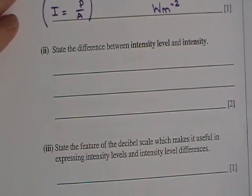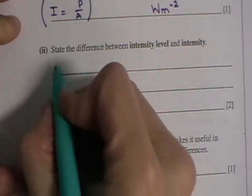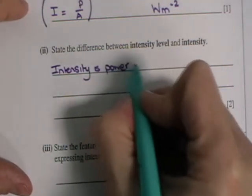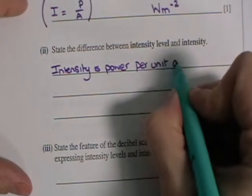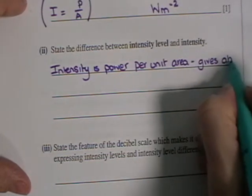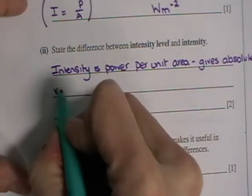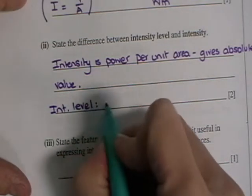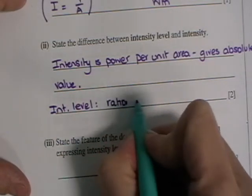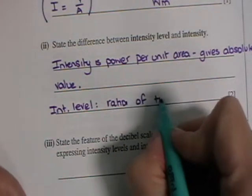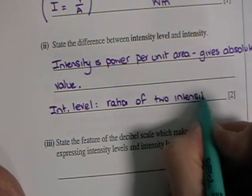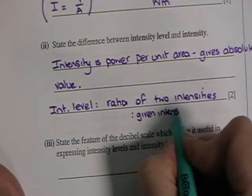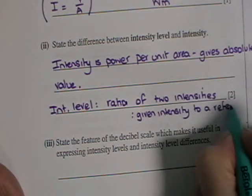State the difference between intensity level and intensity. So intensity is power per unit area and gives an absolute value. Intensity level, however, is a ratio of two intensities. Or you could say it was a ratio of a given intensity to a reference level, and that reference level is the threshold of hearing.